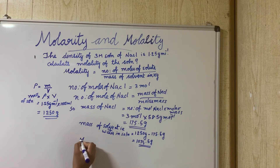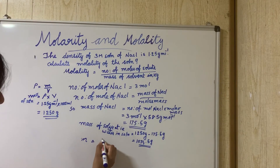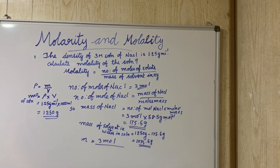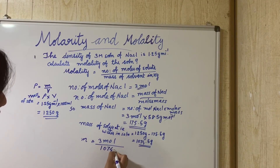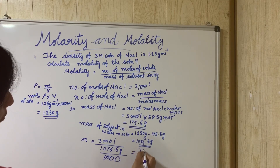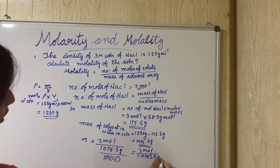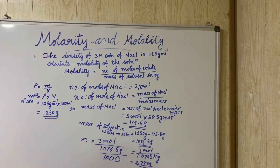Now we calculate the molality. Molality m equals number of moles of solute divided by mass of solvent in kg: 3 mol divided by 1.0745 kg, which equals 2.79 m. This is the molality of the NaCl solution. Thank you for watching.